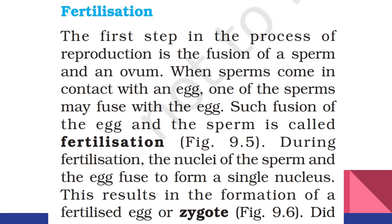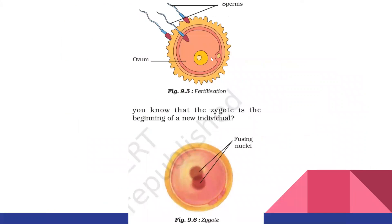Now you can see the picture here. This circular diagram shows the ovum and these are the sperms. As we learned in the previous video, every month one ovum is released from one ovary. This ovum passes through the oviduct and reaches near the oviduct or in the uterus. The male reproductive cell sperms enter, and millions of sperms will be there.